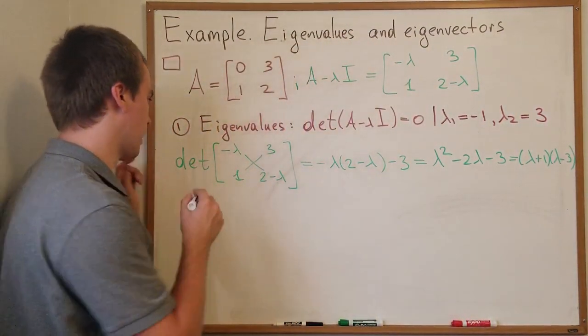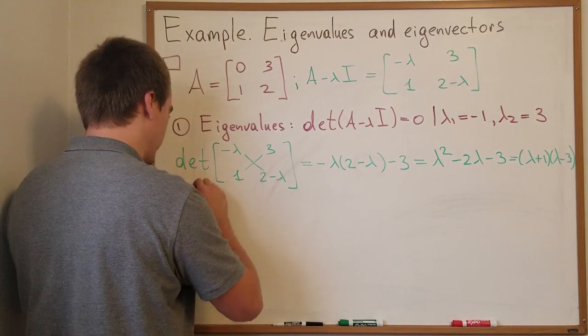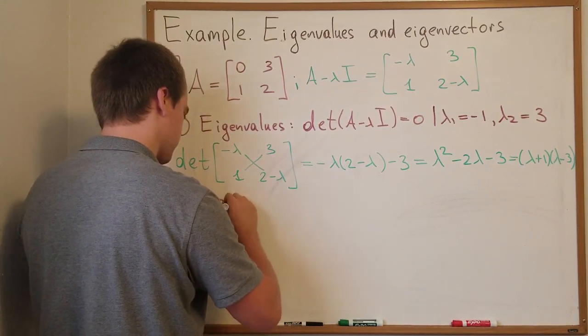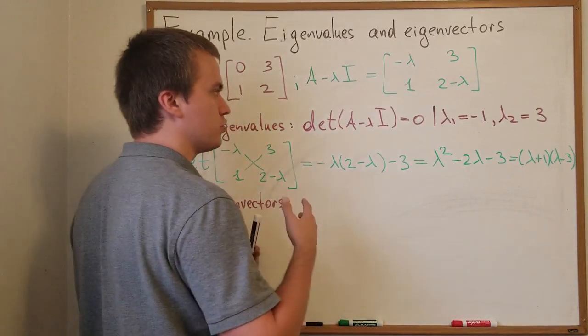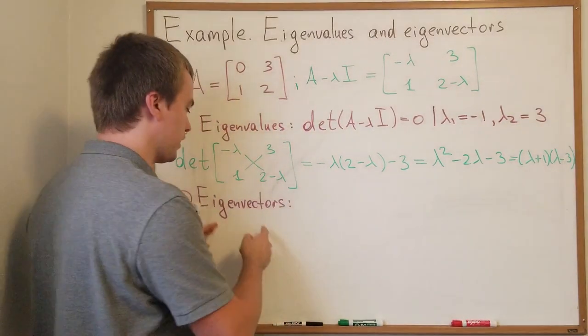We're done with step number 1. For step number 2 we want to find our eigenvectors. So if we want to find our eigenvectors first we need to choose for which lambda we want to find our eigenvectors.